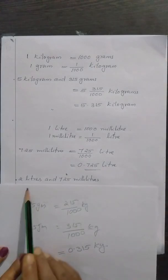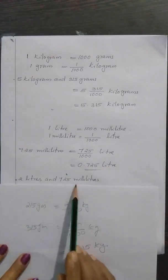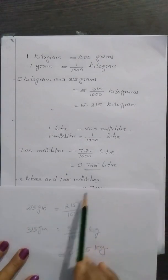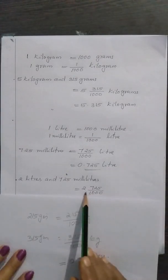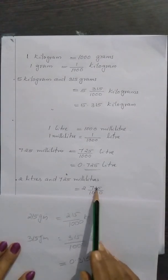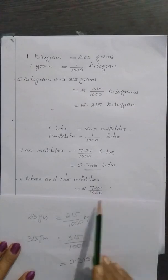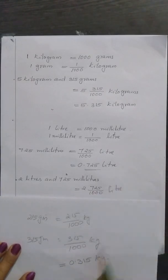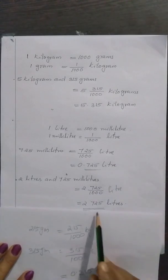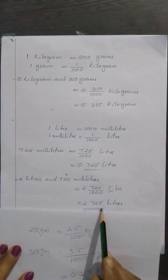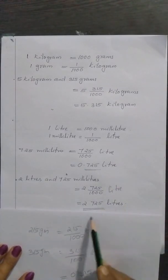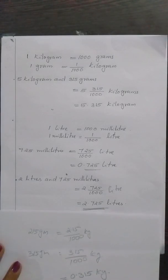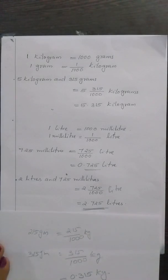2 litres and 725 milliliter together is 2725 divided by 1000 litre, which is equal to 2.725 litre.